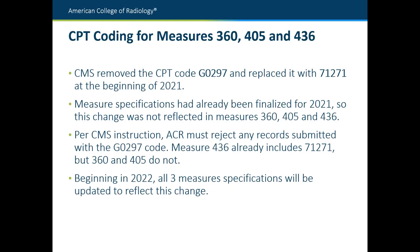Measure 436 already includes the code 71271, so that one's good to go. Anything you're reporting for G0297 should be changed to 71271. Measures 360 and 405 have not been updated yet — next year they will be, beginning in 2022. But for this year, there's really nothing we can do because those measure specs were already finalized.